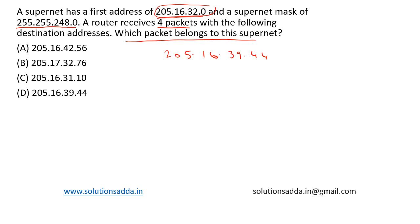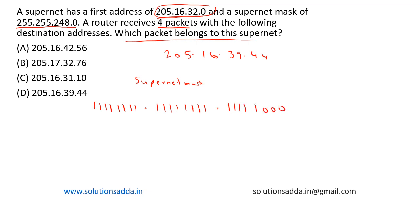The supernet mask is 255.255.248.0. It is represented in binary as: first octet — 11111111, that is 255; second octet — also 11111111, that is 255; third octet — 11111000, that is 248; and the last octet — 00000000, that is 0. This is the supernet mask.